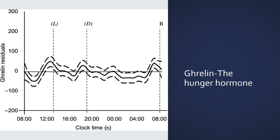Ghrelin is the hunger hormone — this is really interesting because ghrelin follows the circadian rhythm but is also impacted by our feeding schedule. It also appears to have an impact on our secretion of human growth hormone. Ghrelin is the hunger hormone: generally speaking, when food hasn't been in your stomach for a while, ghrelin increases to motivate you to eat. As mentioned with the purpose of circadian rhythms, appetite is really going to motivate us to find food.